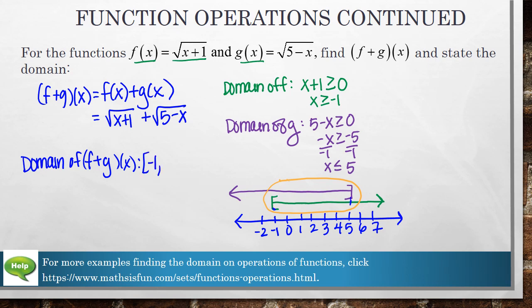So again, the domain is the intersection, it's the values that will go into both functions, so that ends up giving us this region right here.